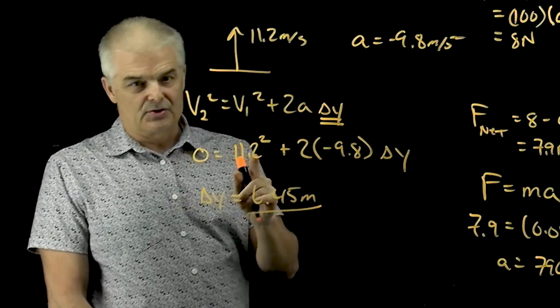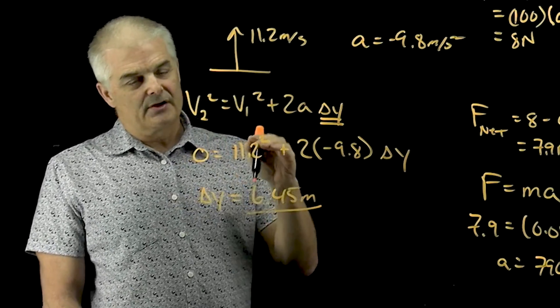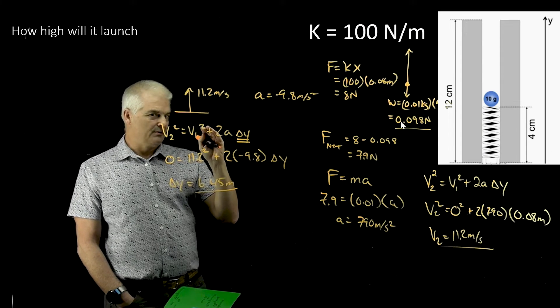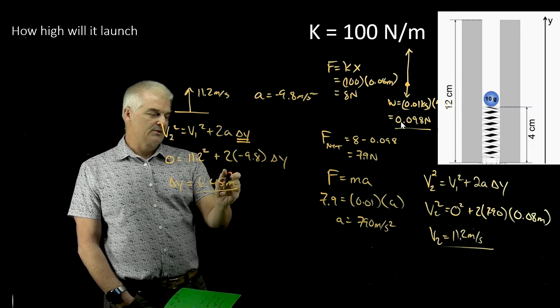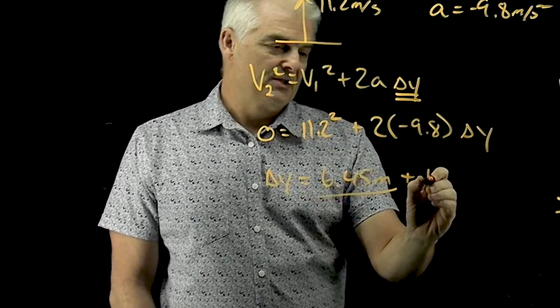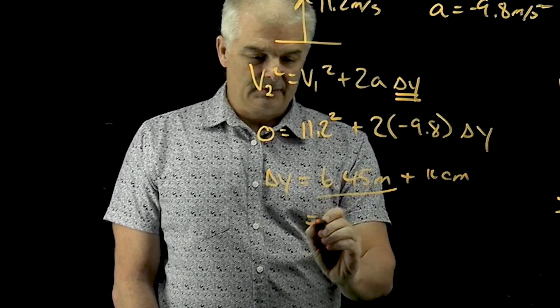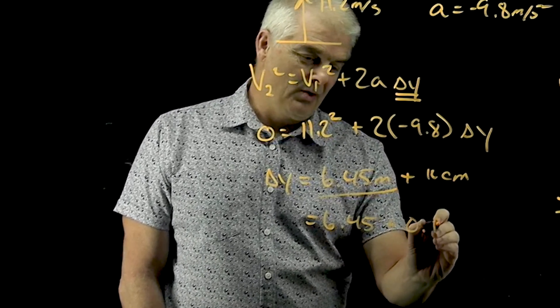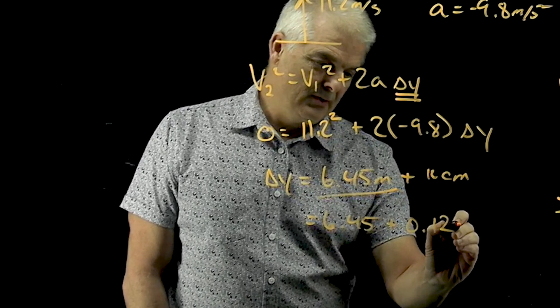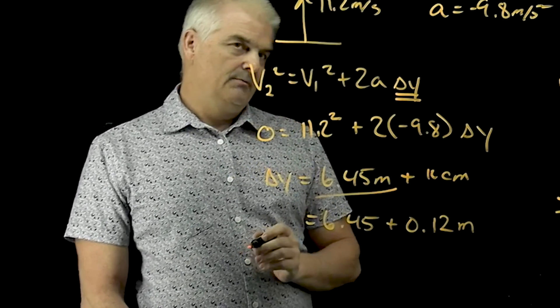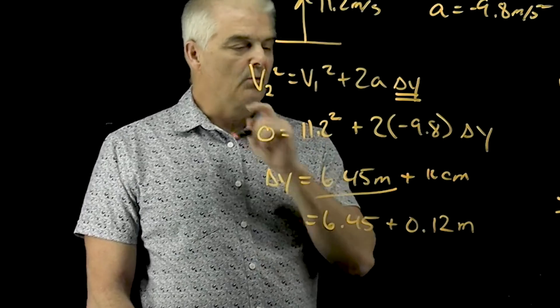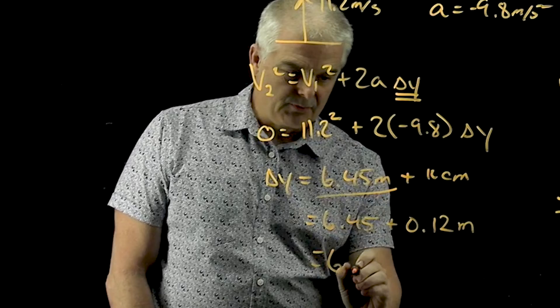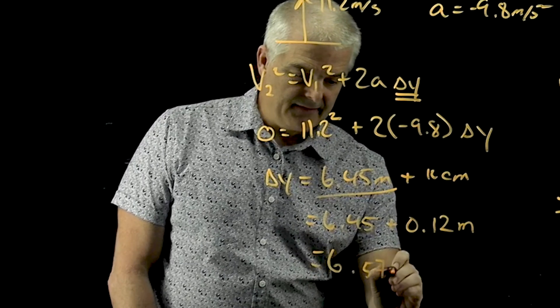It would go 6.45 meters. I said, no, that's not 100% true, because if the launcher is 12 centimeters tall, it's going to launch from 12 centimeters. Does that make sense? So this is actually going to be plus 12 centimeters. So that's going to be 6.45 plus 0.12 meters. Yeah, there's 100 centimeters in a meter, so 0.12 meters. So that would be 6.57 meters.